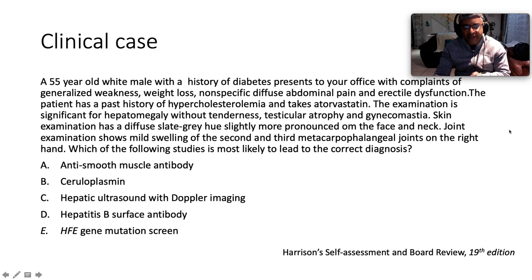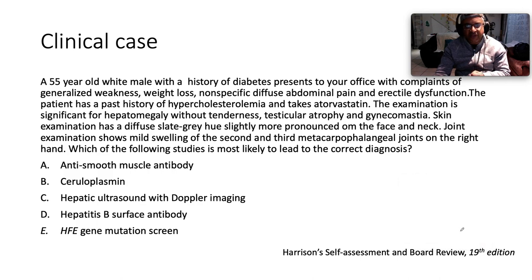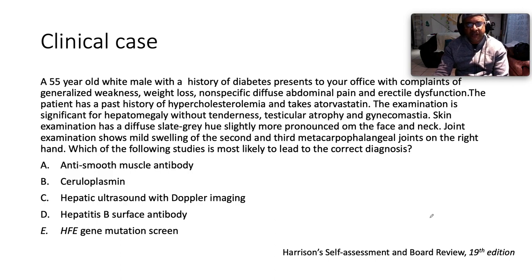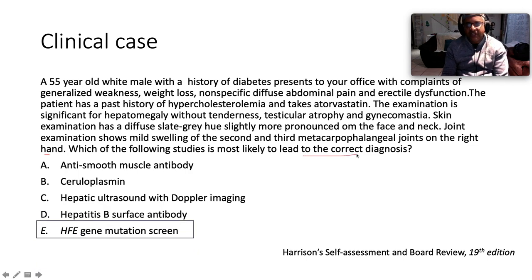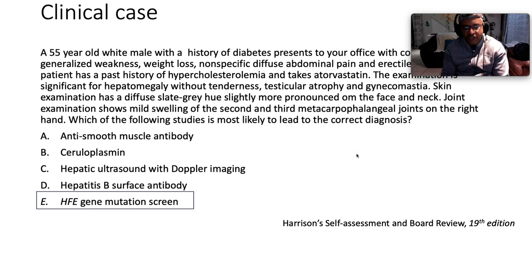Coming back to our clinical case — this was a case of hemochromatosis. A 55-year-old Caucasian gentleman with weakness, weight loss, abdominal pain, erectile dysfunction, atorvastatin use, hepatomegaly, testicular atrophy, gynecomastia indicating cirrhosis, slate-gray skin hue, and arthritis of the second and third metacarpophalangeal joints. The answer to the question is the HFE gene mutation screen.